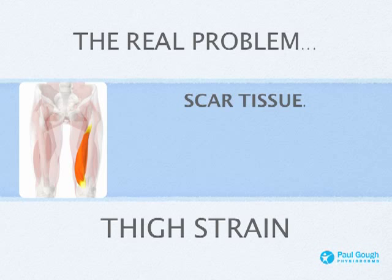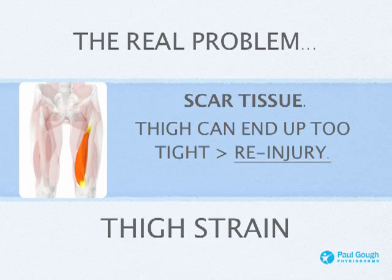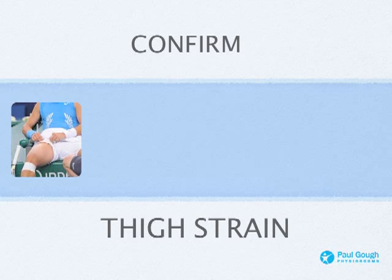The real problem with thigh strains is that they develop something called scar tissue. If you have a quick look at the image on the left, that's an image of your body with the thigh area highlighted — the major muscle that gets damaged, particularly in football or rugby where you strike a ball, or even in sprinting where you've pushed off too quickly. What happens is scar tissue settles into the thigh and it's really stiff. If you're not careful, your thigh can end up too stiff and too tight, with no movement in it, and it can lead to re-injury three, four, five, six weeks later. You think the muscle has recovered and the initial pain is gone, but the thigh is too tight and that can cause lots of problems later on.